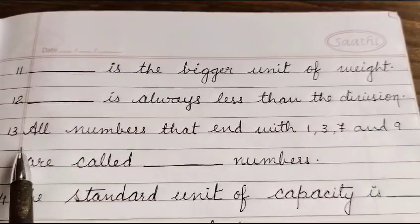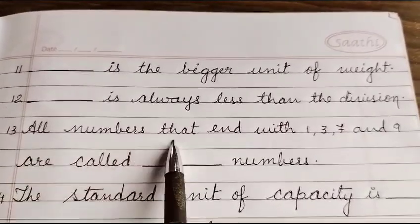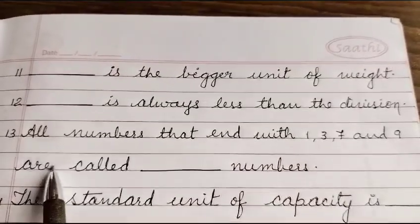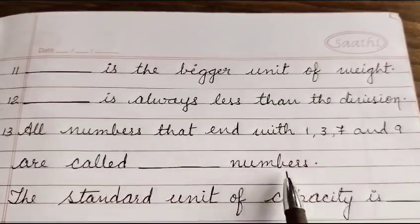Question number 13: All numbers that end with 1, 3, 7, and 9 are called dash numbers.